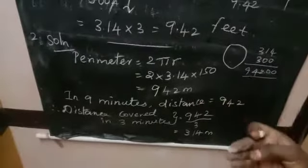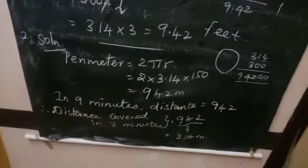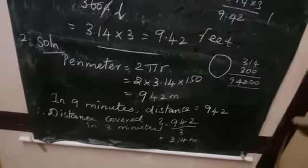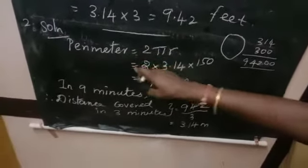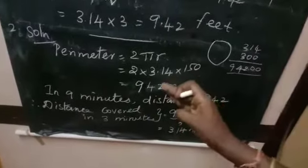Pi equals 3.14. Listen students, a person covers a circular track. We want to find out firstly the perimeter of the circular track. Perimeter of circular track formula is 2 pi r units. What is the radius?